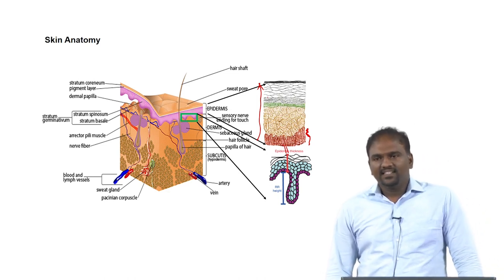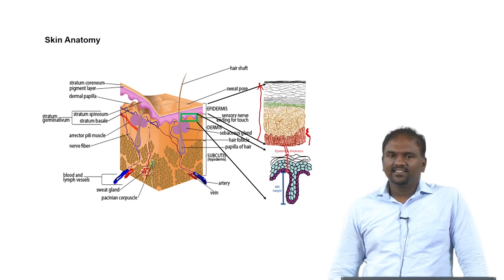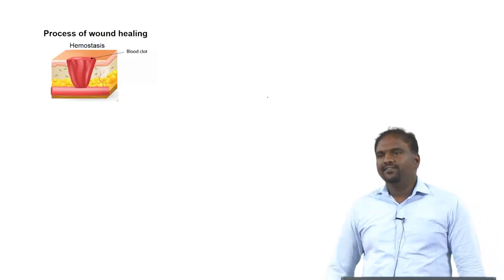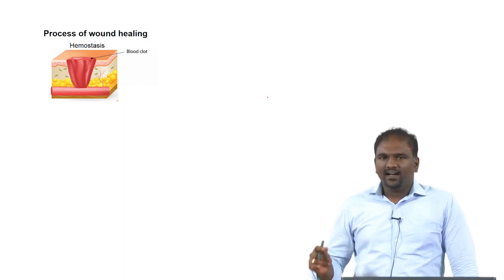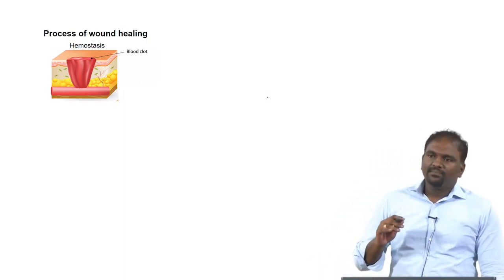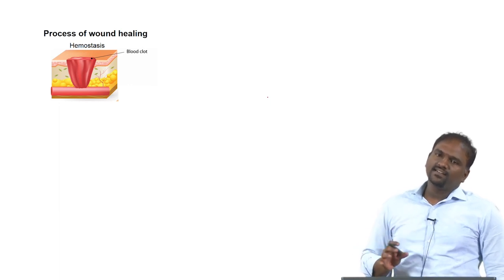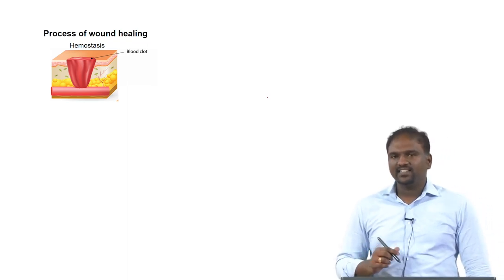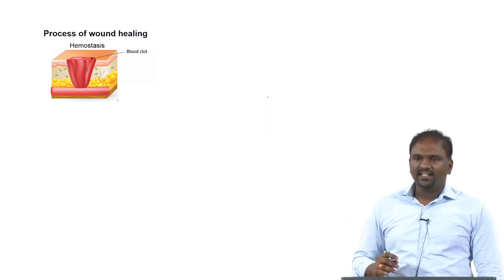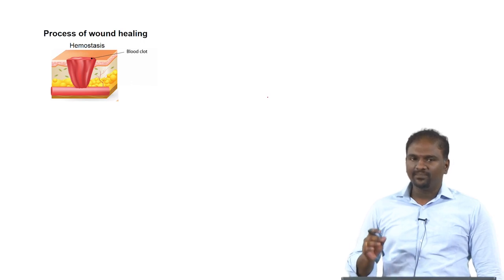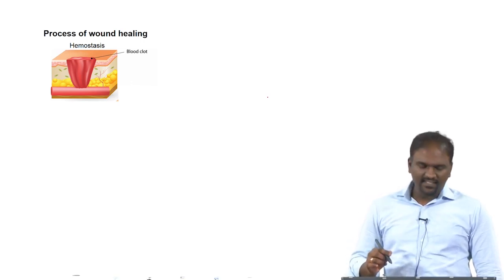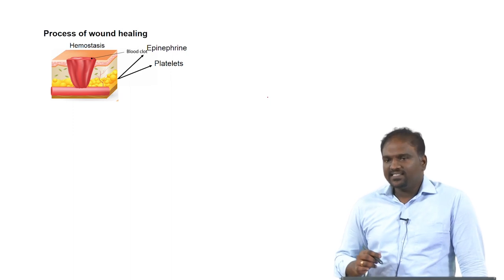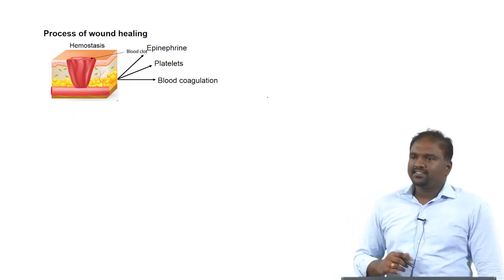Apart from that, the transfer of soluble molecules from dermis to epidermis happens through this junction. When there is a wound in normal skin, by innate mechanism the wound will get healed. It involves a series of steps. The first step is hemostasis, where blood coagulation will occur. During blood coagulation at the wound site, epinephrine will be released. Once epinephrine is released, platelet coagulation will start — the complete process is called hemostasis.